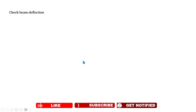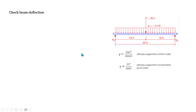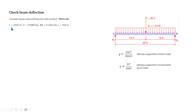Now we check beam deflection. For a simply supported beam with uniform load: δ = 5wL⁴ / (384EI). For a concentrated midspan load: δ = PL³ / (48EI). We use the ASD beam selection (W24×68) with moment of inertia I = 1830 in⁴ and E = 29,000 ksi.